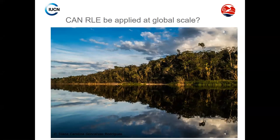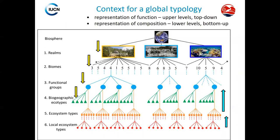That's why some years ago, a group of scientists got together and started developing a global typology that is currently under review and already drafted on the web. It's basically a proposal for a hierarchical classification structure around six levels of hierarchy where the first three — realms, biomes, and functional groups — are defined top-down, and then biogeographical ecotypes, ecosystem types, and local ecosystem types are identified bottom-up.